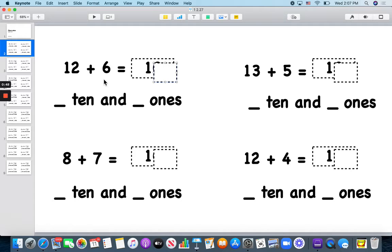12, 13, 14, 15, 16, 17, 18. 12 and 6 is 18. So that would be a 10 and an 8.